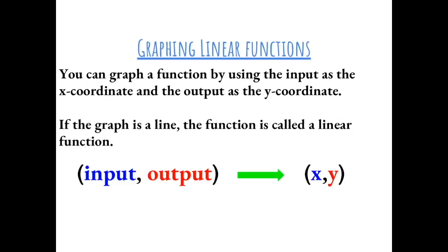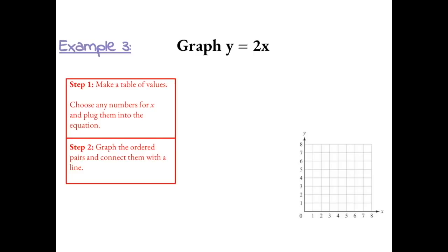You can graph a function by using the input as the x coordinate and the output as the y coordinate. If the graph is a line, then the function is called a linear function. Example 3: Graph y equals 2x.